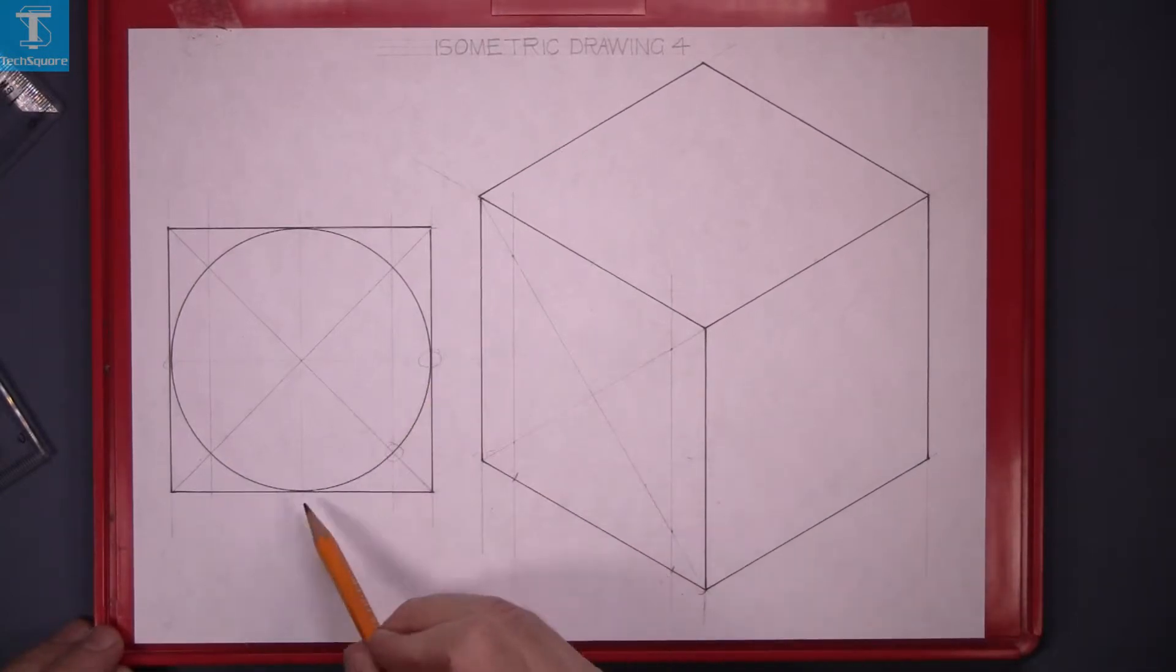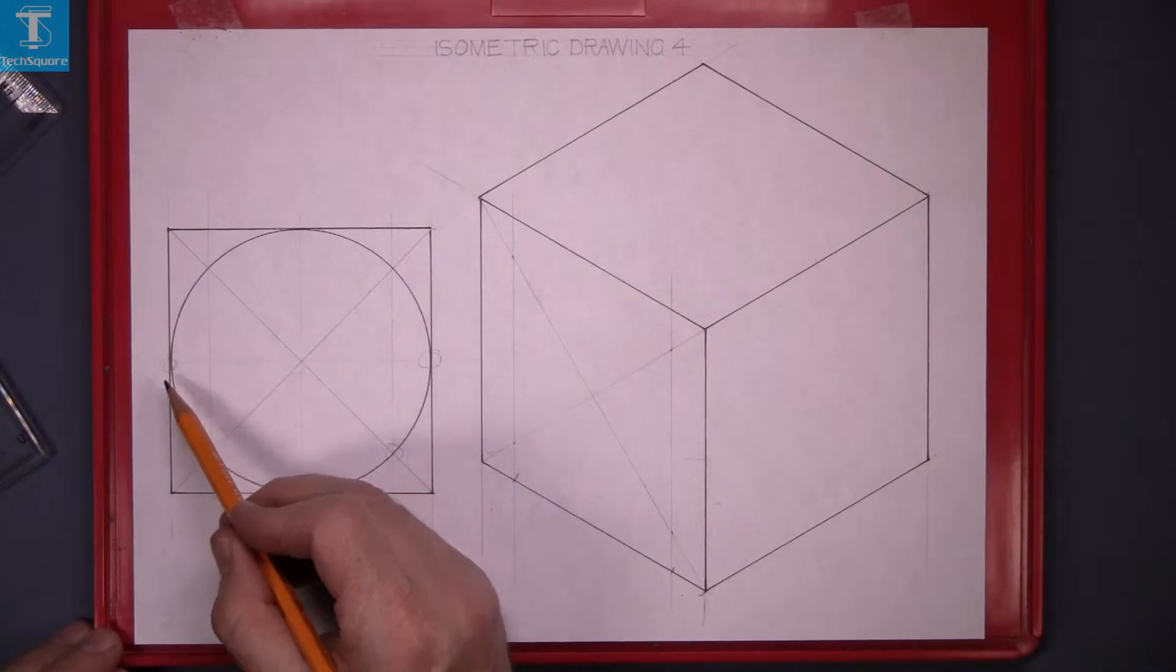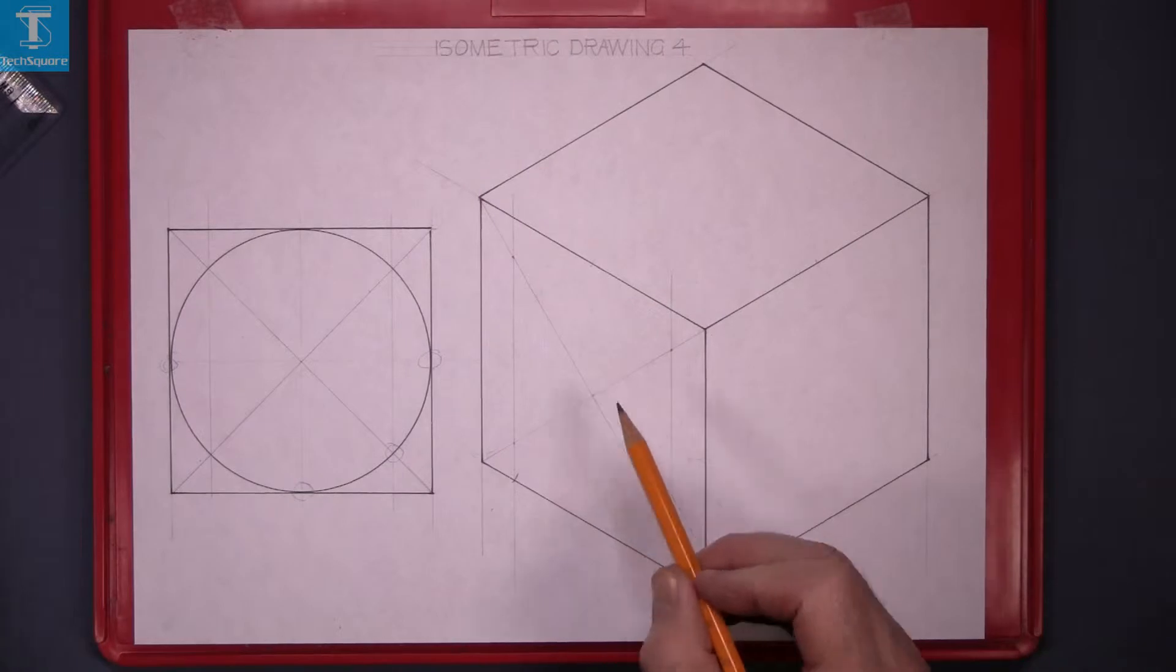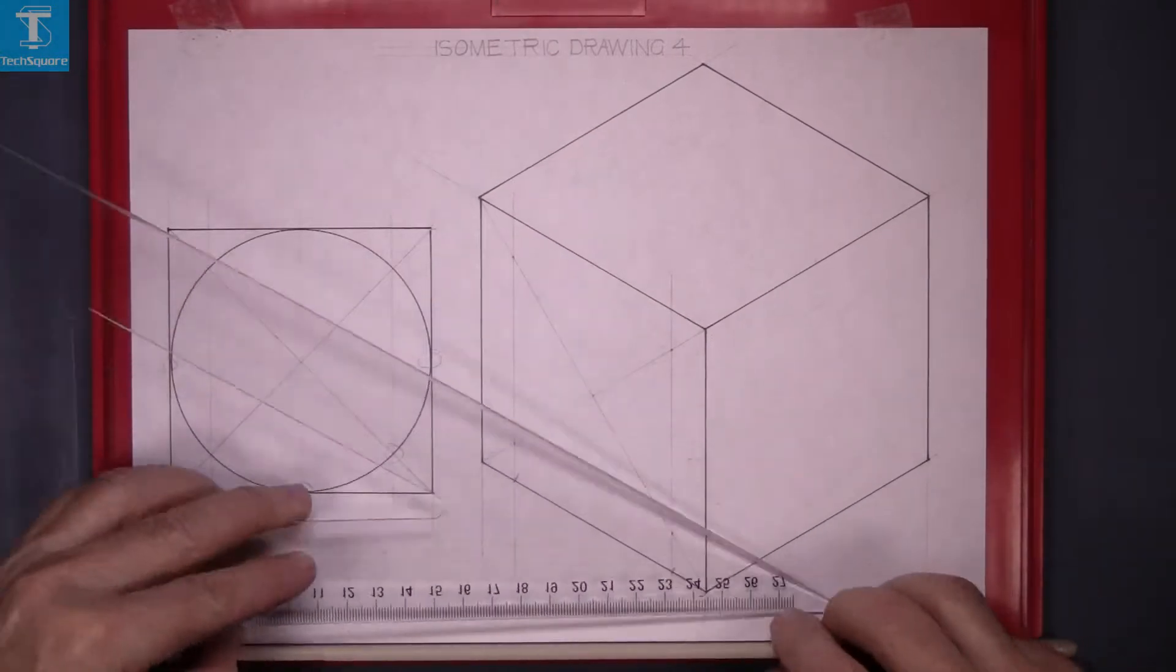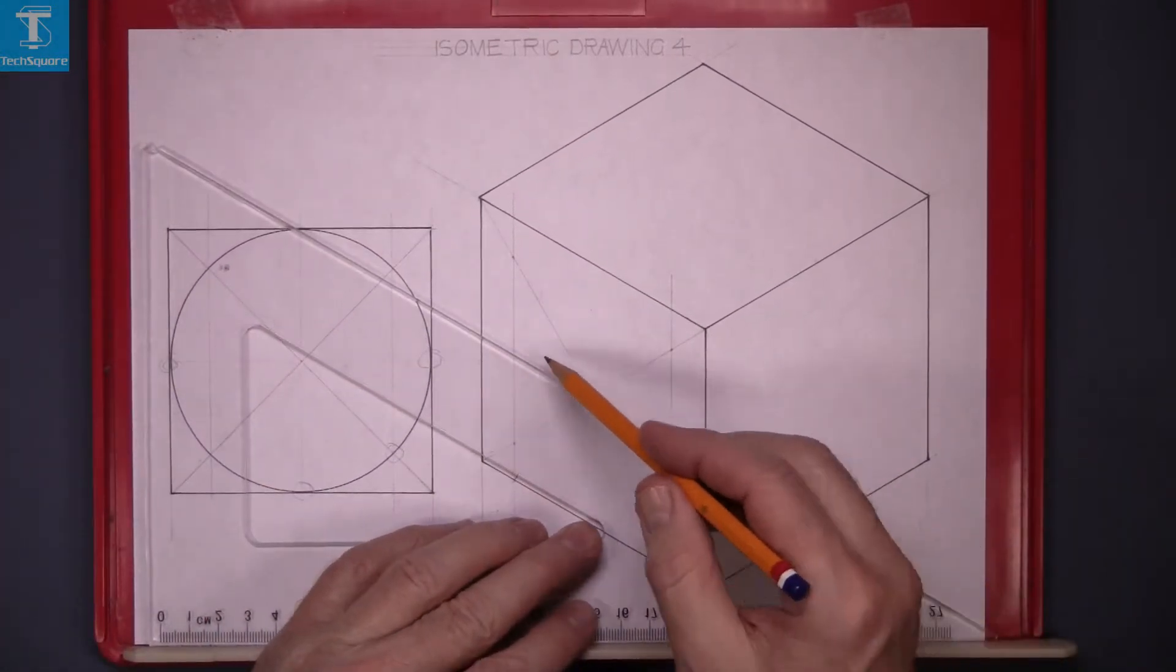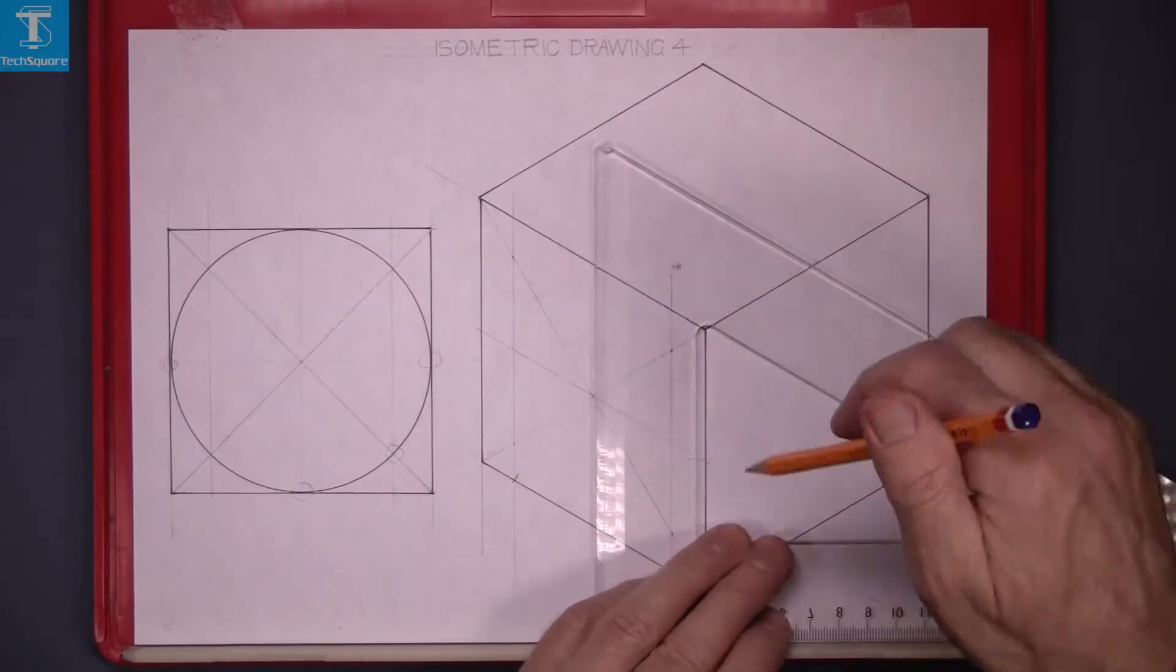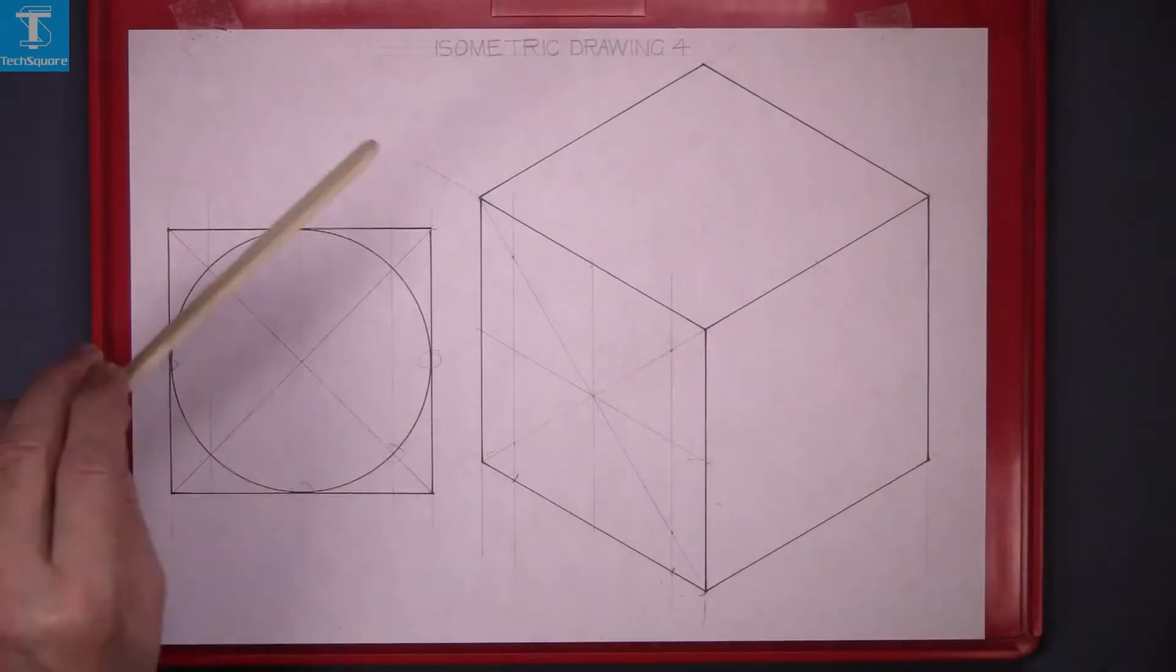Now where the circle is tangent with the side of the square, we get four more points. So draw a level line there and a vertical line. And that's the four points there.